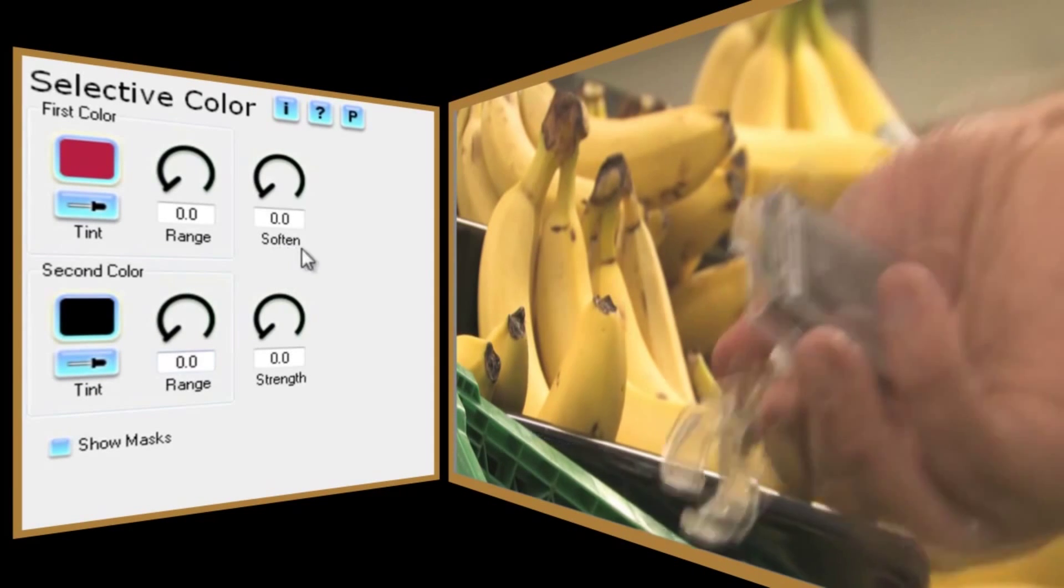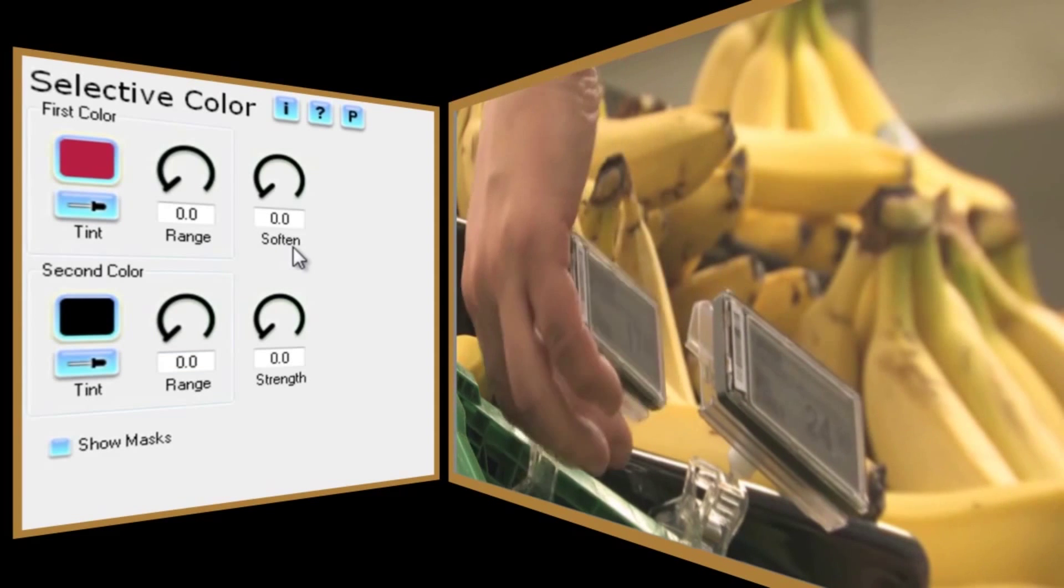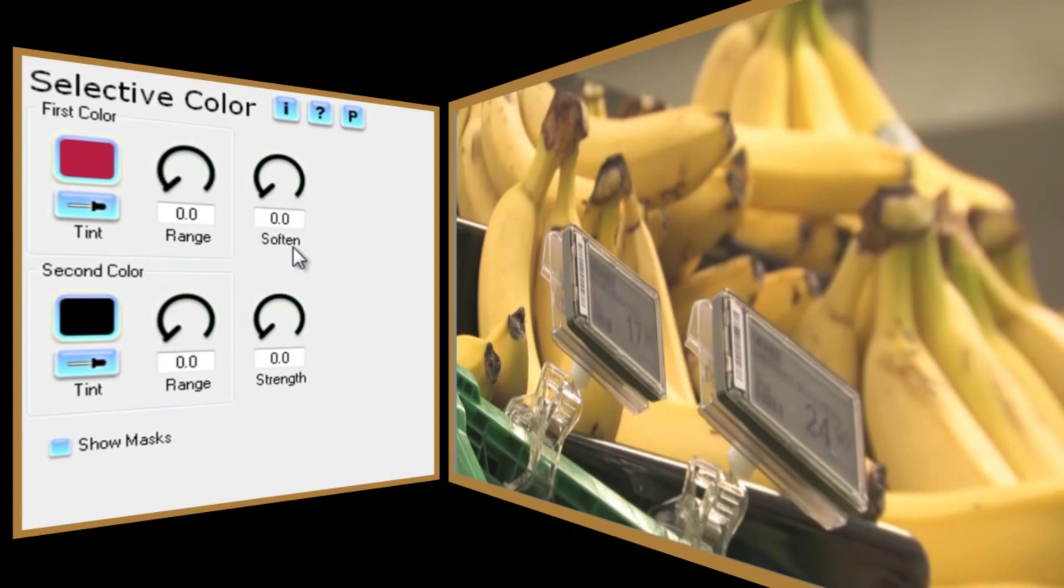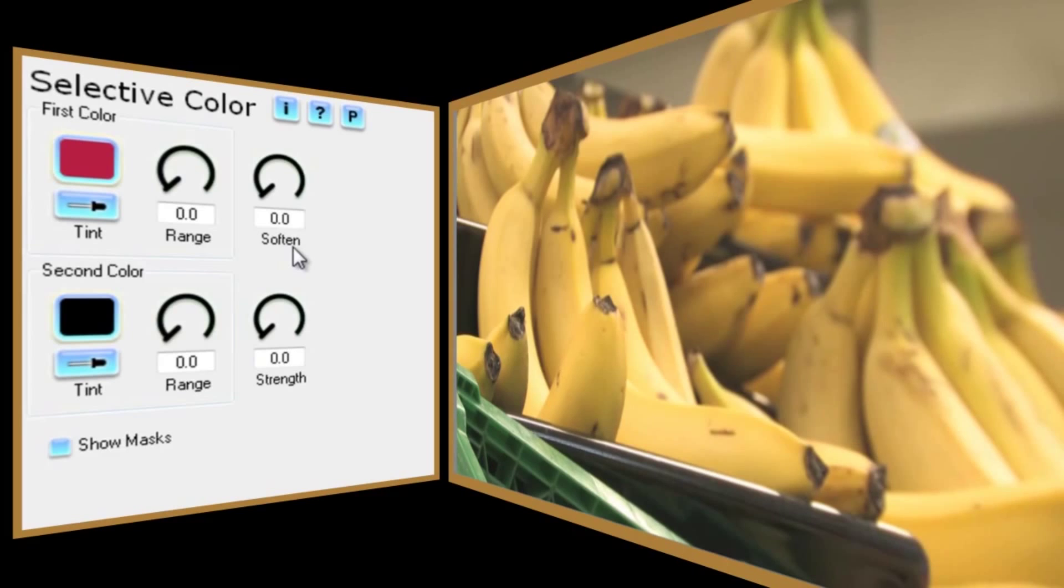Here we have the Soften control and this applies a blur to the color ranges selected and helps to reduce color noise and to fill in any gaps.